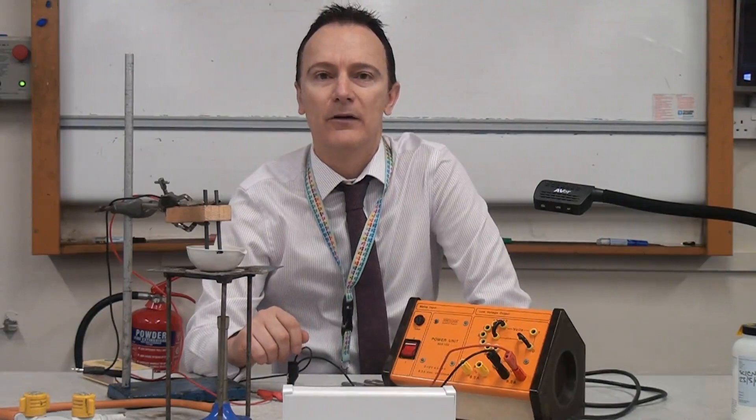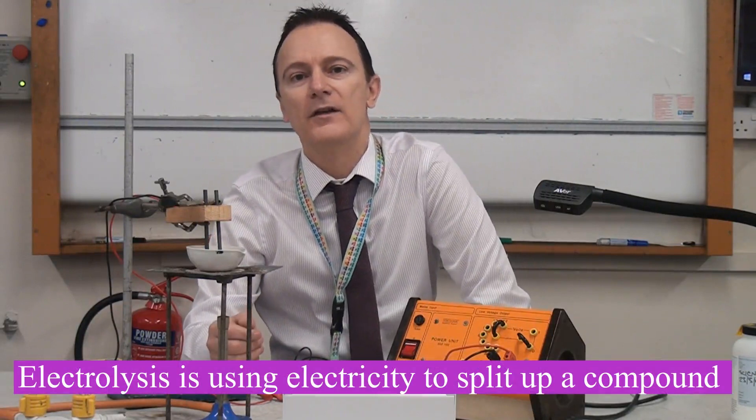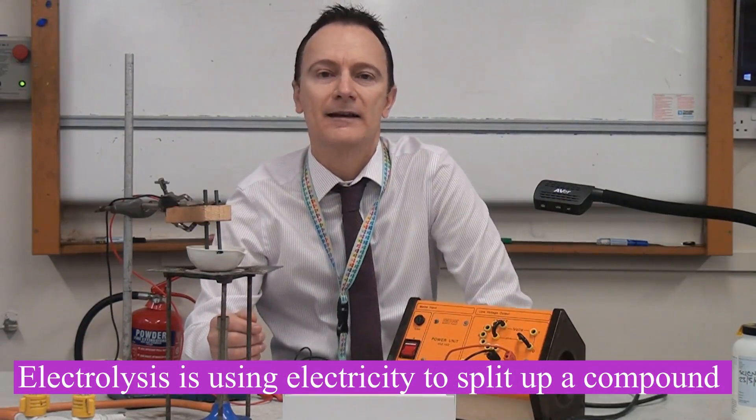And in this dish I've got some solid zinc chloride and in a moment I'm going to start heating it up until it melts and then we'll see if we can do electrolysis on it. Electrolysis means splitting up using electricity. So we'll see if we can split the zinc chloride into some zinc and also chlorine.